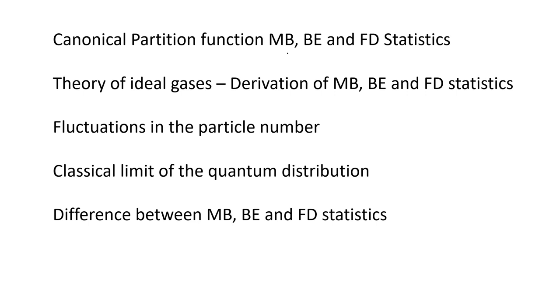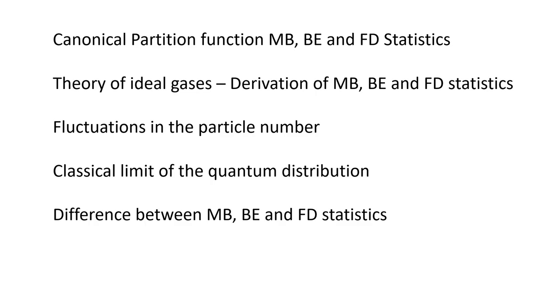We shall now try to make a distinction between the Maxwell-Boltzmann, Bose-Einstein, and Fermi-Dirac statistics — called MB, BE, and FD statistics — through a simple example of two particles and three energy states. We will also talk about the theory of ideal gases, derive the three statistics, discuss fluctuations in particle number, obtain the classical limit of quantum distributions, and list the differences between these three statistics.